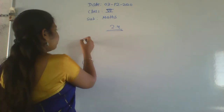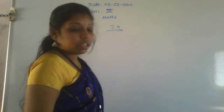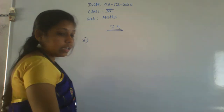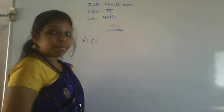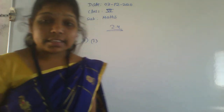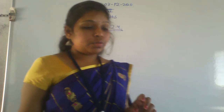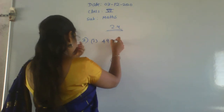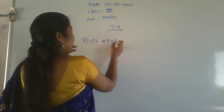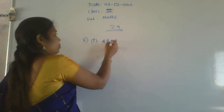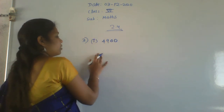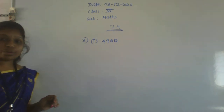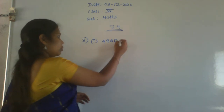Third question: check the divisibility of the following numbers by 4. The rule for 4 is that the last 2 digits must be divisible by 4. First number: 4900 — the last two digits are 00, and 0 is divisible by 4. Therefore it is divisible by 4.